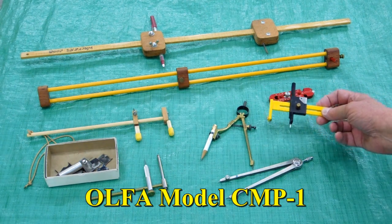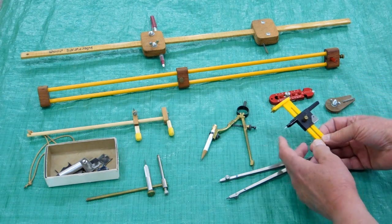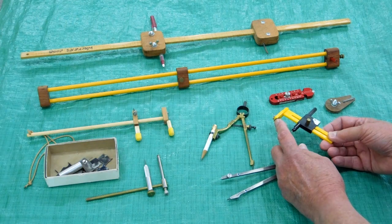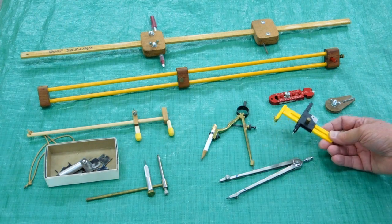These are a Japanese compass. Very handy little things. Sharp point. You can use either a pencil lead here or a knife blade for cutting out gaskets.